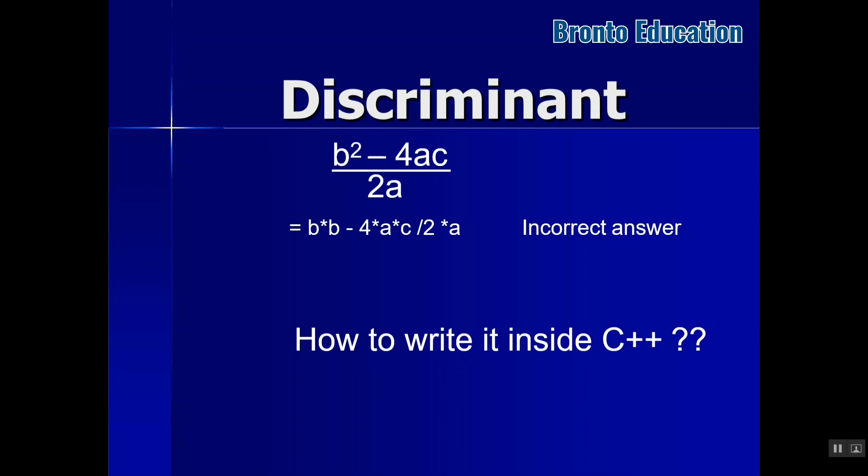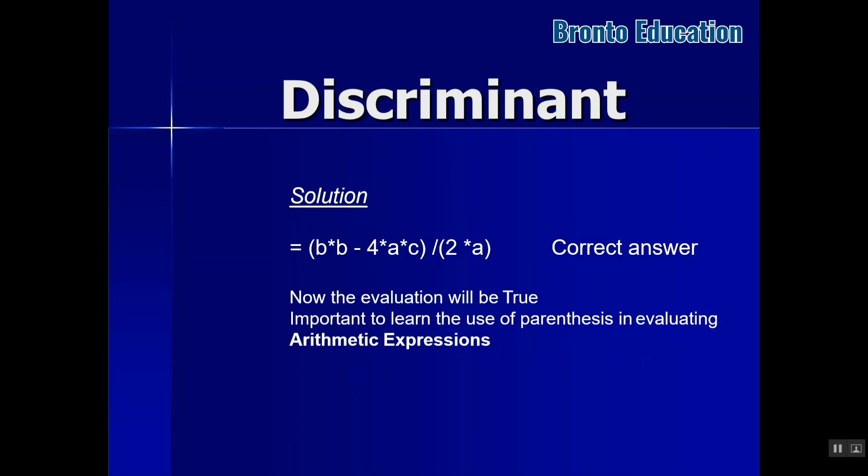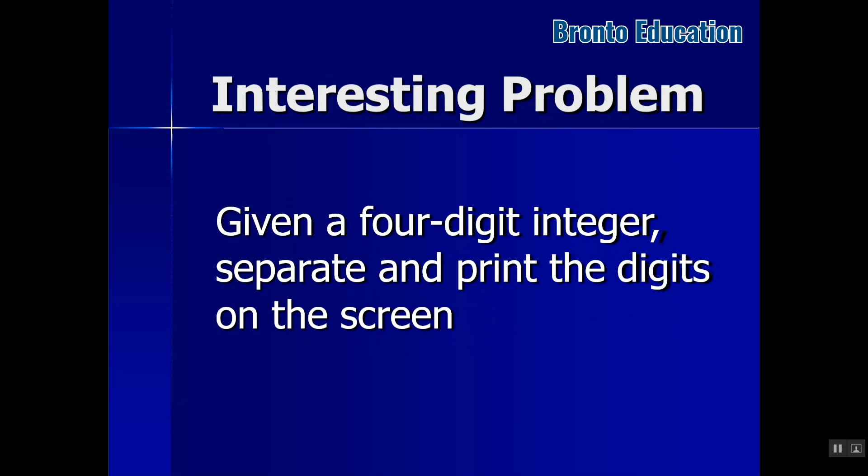So we have to use parentheses to show that b square minus - here b multiplied by b minus 4 multiplied by a multiplied by c - will be inside one parenthesis, then the whole will be divided by 2a. This is the correct answer.